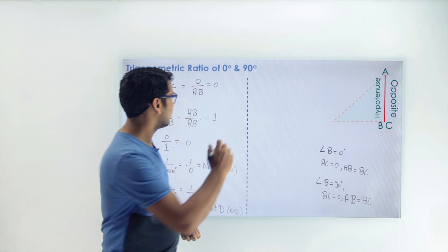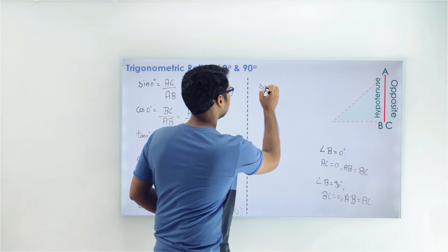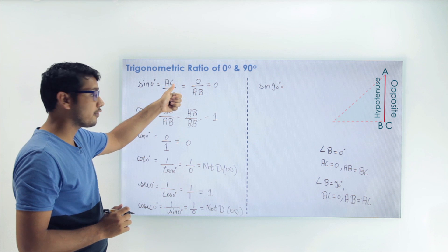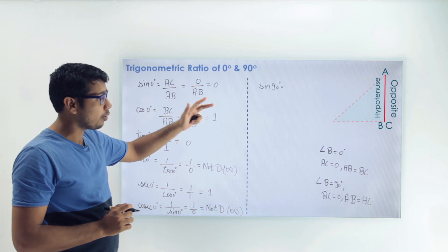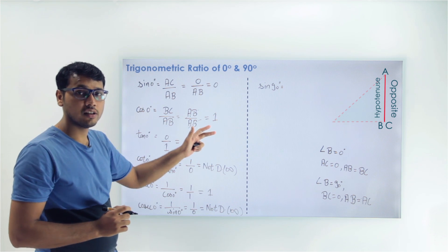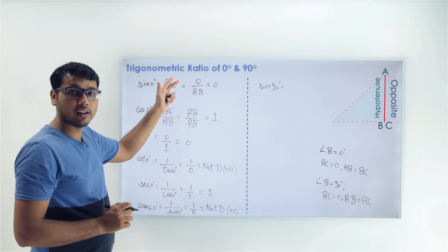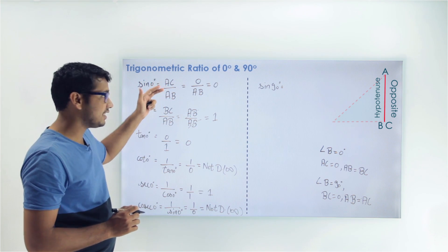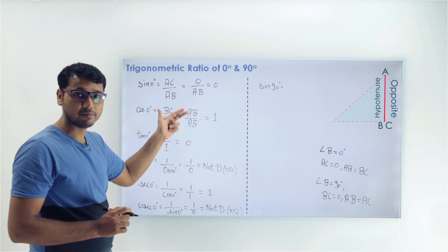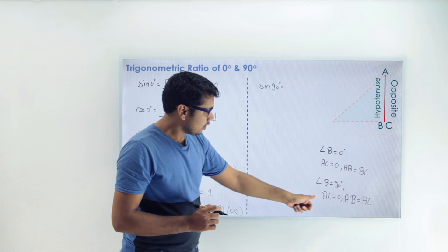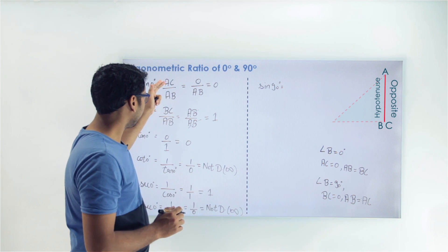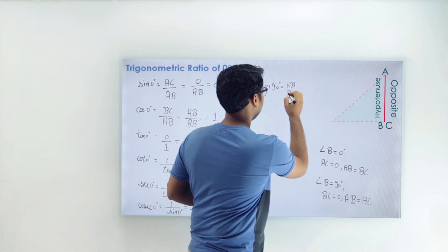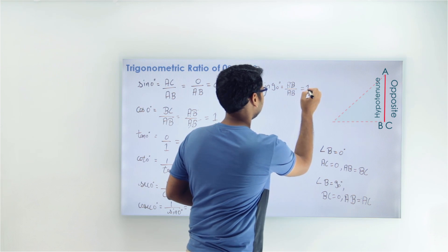Our first value is sin of 90 degrees. Sin 90° equals opposite upon hypotenuse. Since opposite and hypotenuse have not changed and we are looking at angle B, this is AC upon AB. Now AB equals AC, so in place of AC we can write AB. This gives AB upon AB, and hence the value of sin 90° comes out to be 1.